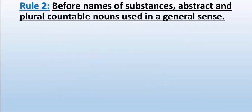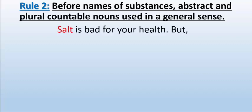Rule number two: before names of substances, abstract nouns, and plural countable nouns used in a general sense, we don't use article. Substances like food, gold, silver, salt, and diamond. Abstract nouns like wisdom and honesty. Plural countable nouns like 'children.' When these nouns are used in a general sense, article is not used. For example, 'Salt is bad for your health' — salt is a substance used in a general sense, so we don't use any article before it.